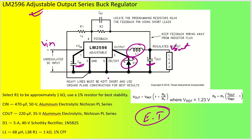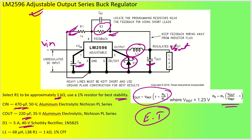For the adjustable version, the feedback resistors R1 and R2 are designed using: Vout = Vref × (1 + R2/R1), where Vref = 1.23V. Start with R1 = 1 kΩ for best stability (R1 must be between 240Ω and 1.5 kΩ), then calculate R2. A typical adjustable design uses Cin = 470 µF, Cout = 220 µF, a 5A/40V catch diode, and a 68 µH inductor for 5V/3A output.